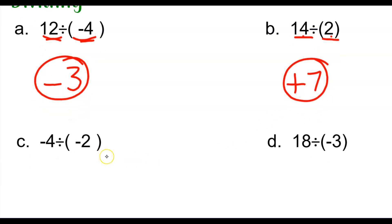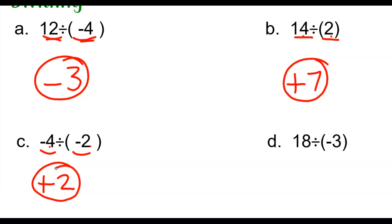You try C and D all by yourself. Both numbers in C are negative, and even though they're both negative, because the signs are the same, the answer will be positive. 4 divided by 2 is 2, positive 2. In D, the two numbers are different signs — one positive, one negative — so the answer is negative. 18 divided by 3 is 6, so the answer is negative 6.